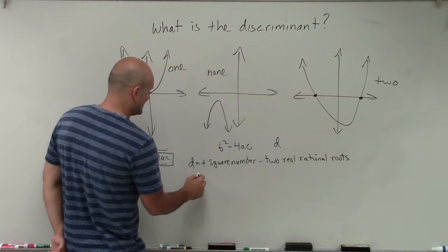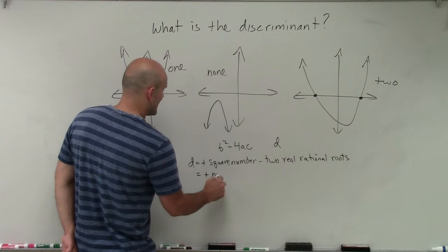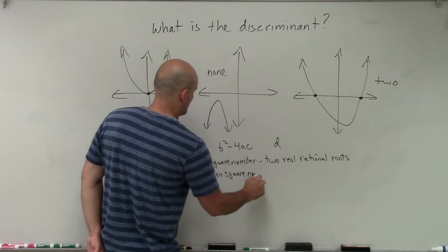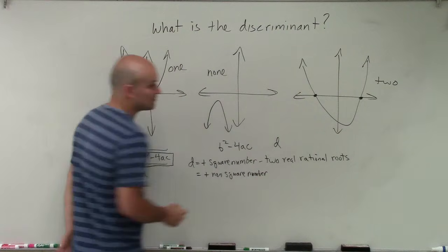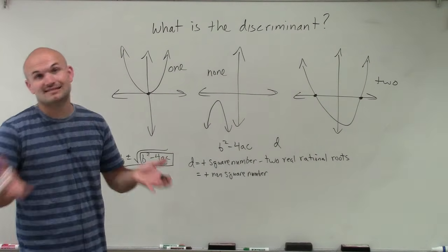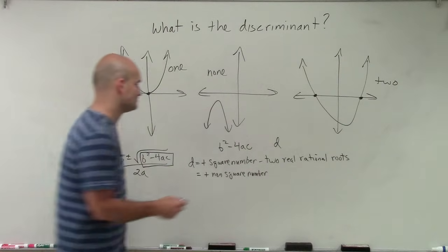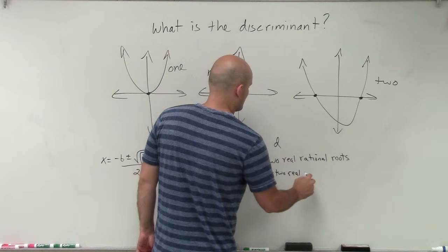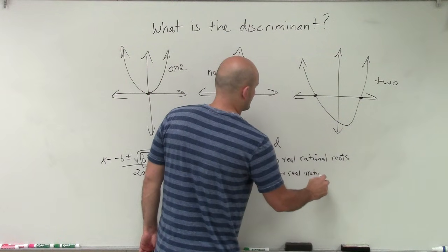If D is positive and a non-square number, non-square numbers would be all the numbers that are not squared, like 8, 7, 11, 15, then we're going to have two real irrational roots.